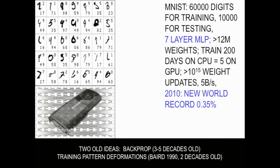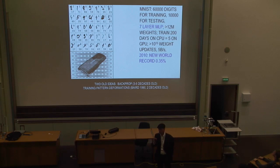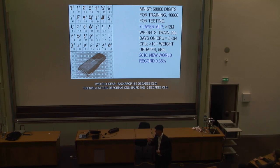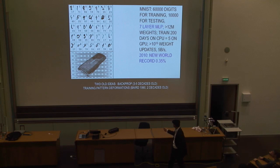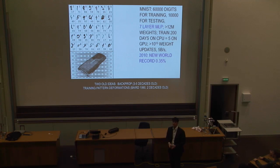We increased the effective training set by making additional training examples from the existing ones, simply by shifting them a little bit, making them a little larger, rotating slightly — the things you do automatically by moving your eyes around. And also warping them, which is good for handwriting but not for general images. These old ideas — one from around 1990, another three to five decades old — combined with plain backprop through deep networks gave the best results on MNIST.